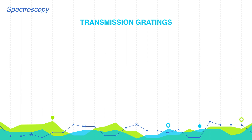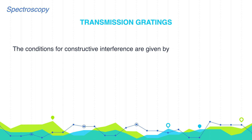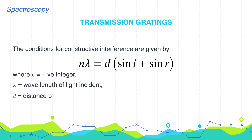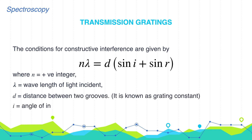The condition for constructive interference is given by n·λ = d(sin i + sin r), where n is a positive integer, λ is the wavelength of incident light, d is the distance between two grooves (also known as the grating constant), i is the angle of incidence, and r is the angle of reflection.